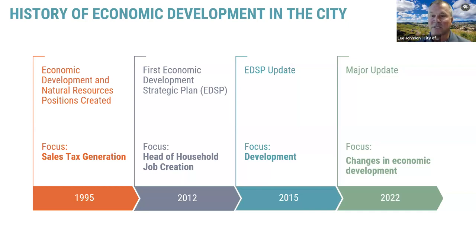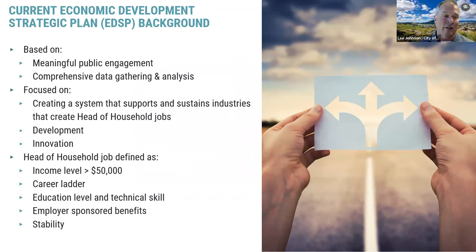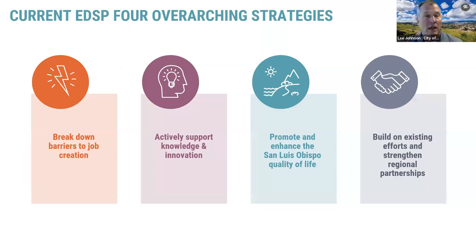In 2015 we were going through our General Plan update — the Land Use and Circulation Element — which created a lot of new opportunity for housing development, so we focused the update on development and how to make development review processes better. We were planning to update again in 2020 but with COVID we decided to push that off until 2022, starting in December. The current EDSP is based on meaningful public engagement, lots of data and analysis, focused on creating a system that supports and sustains industries to create head-of-household jobs — defined as income greater than $50,000, career ladder, education and technical skills, employer benefits and stability.